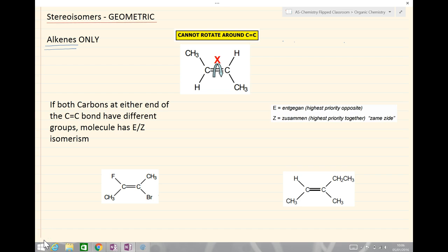So, what is EZ isomerism? Well, our meaning and definition, you don't need to remember these words. You just need to remember the lettering. But E, coming from the German Entgegen, apologies about my German pronunciation there, means highest priority on opposite sides. And Z, meaning Zusammen,